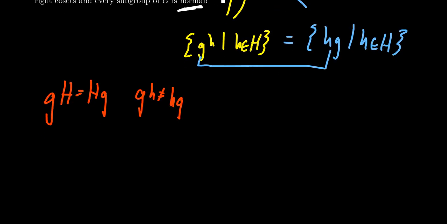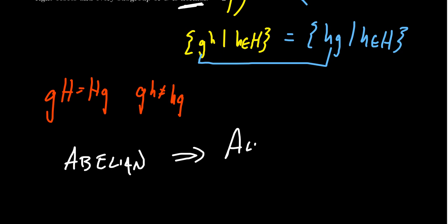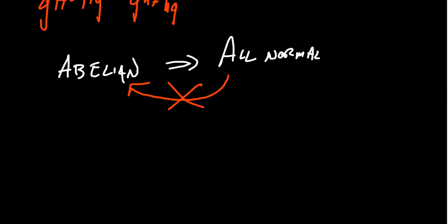You have to be careful though. If you have an abelian group, this implies that all subgroups are normal, but the other direction is not true. We're sometimes tempted to say that if all subgroups are normal, the group is abelian — but no, that's not the case. There do exist certain non-abelian groups where every subgroup is normal.